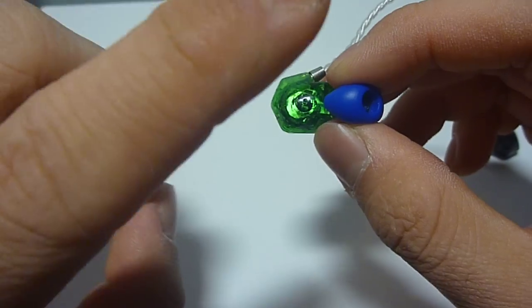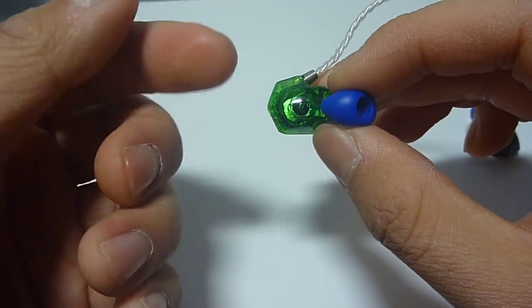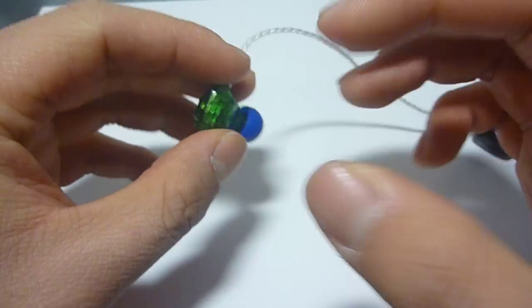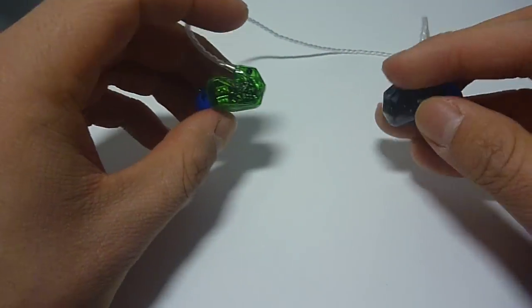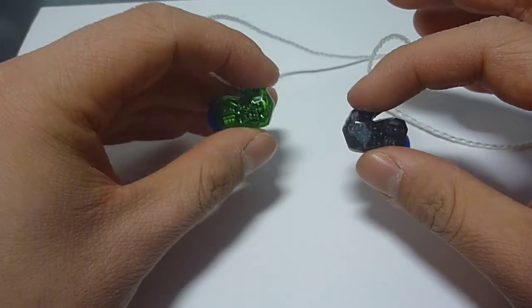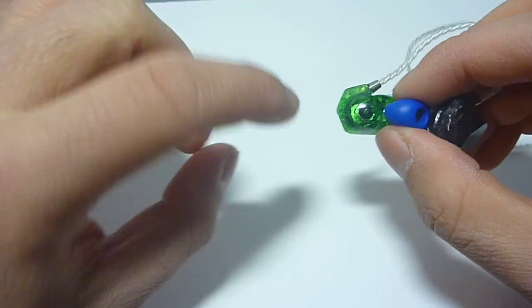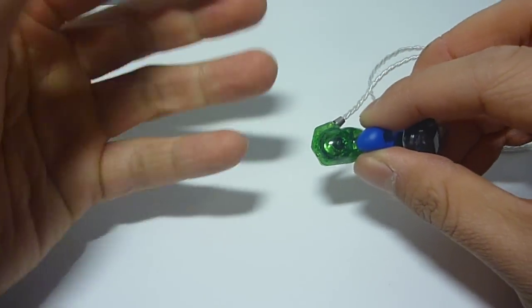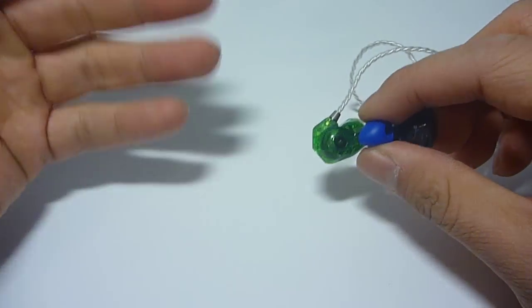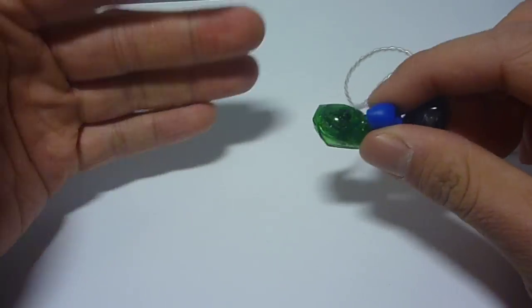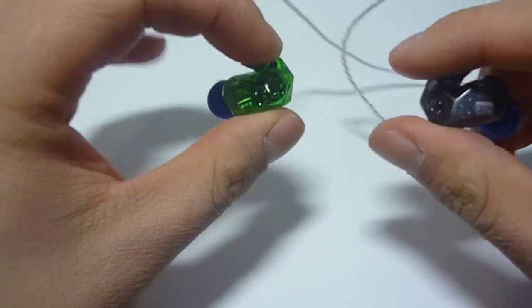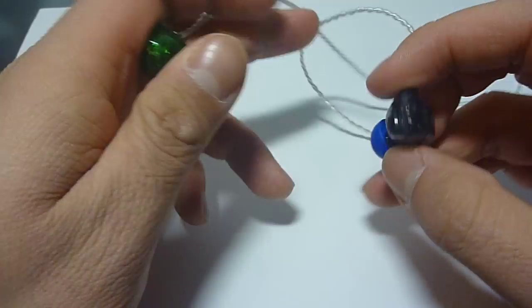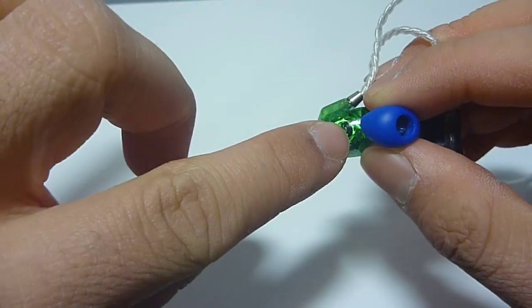You can actually close these vents by putting tape over them, and it will change the sound of these earphones. I'm going to experiment with different types of tape. You can actually poke a hole through the tape to filter the sound and adjust the amount of bass and treble, depending on how you configure them or how you plug up the vents.